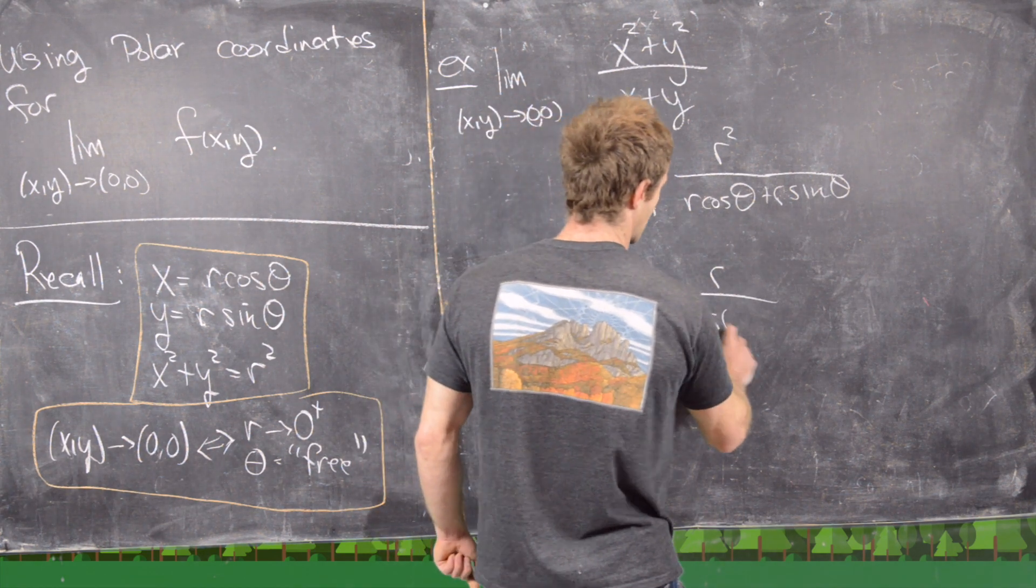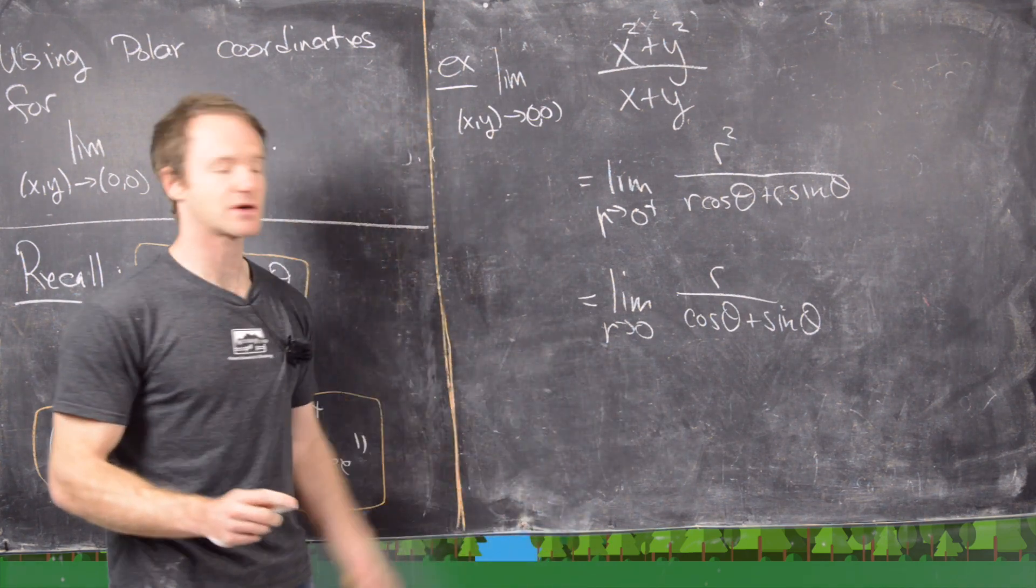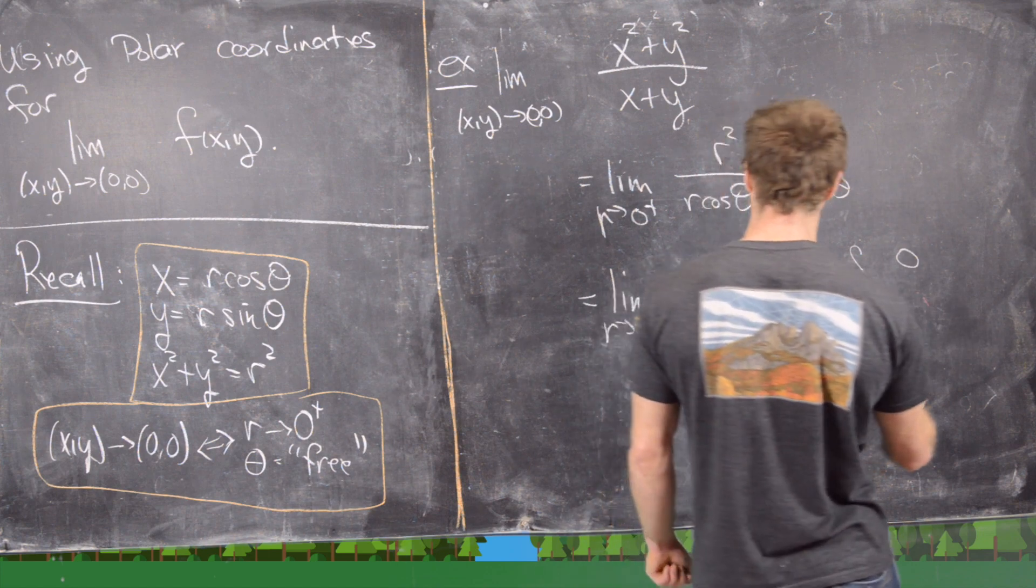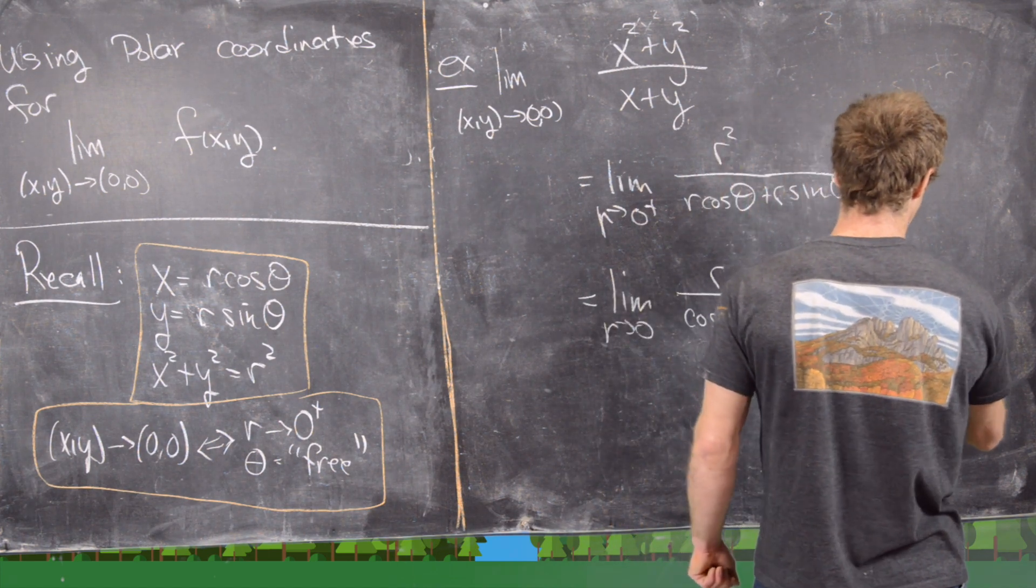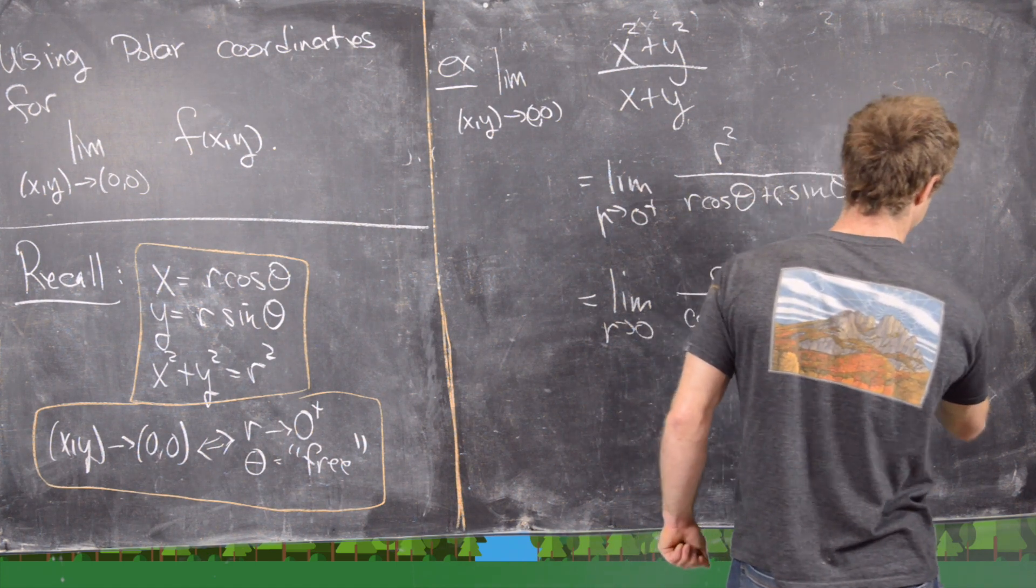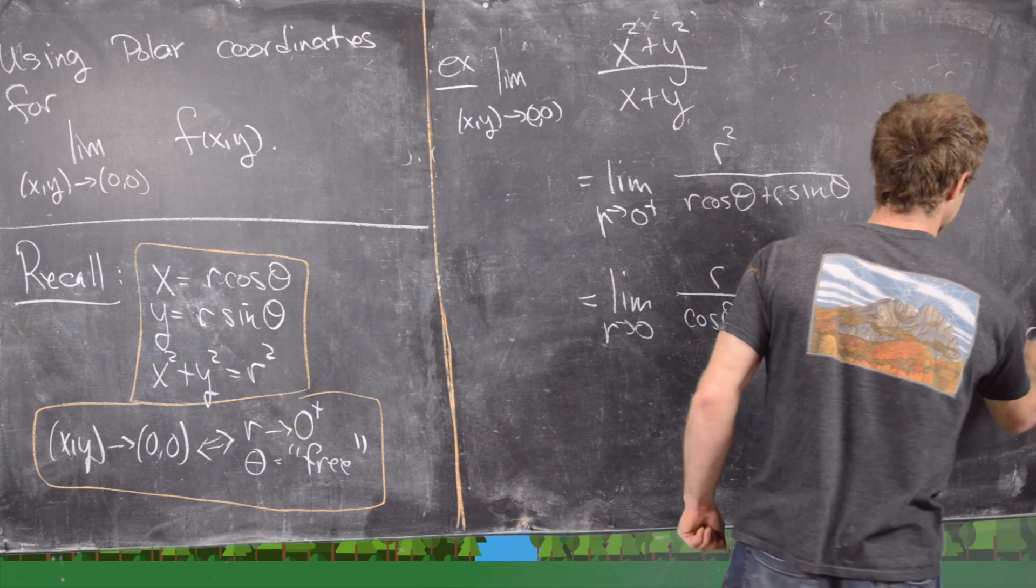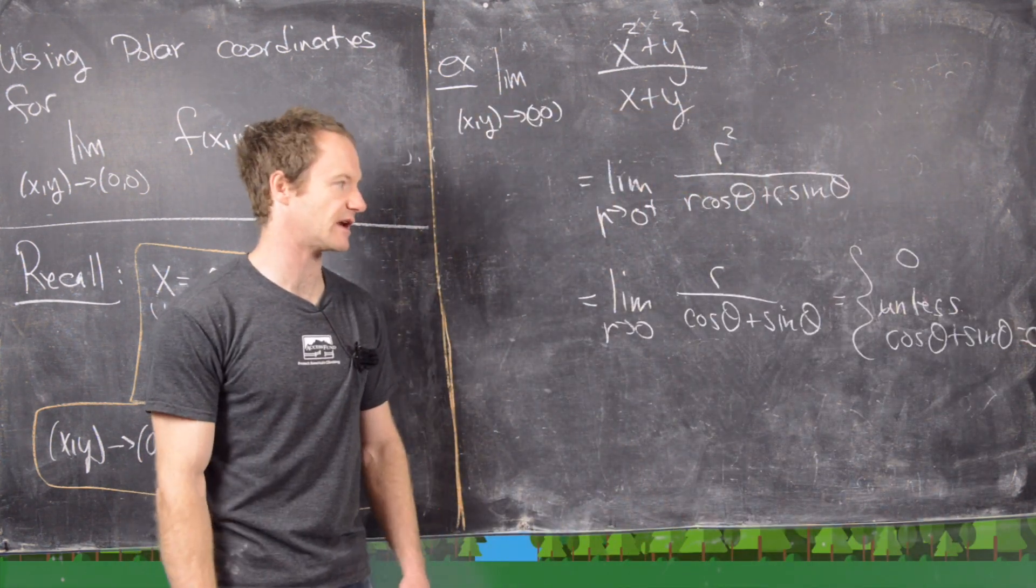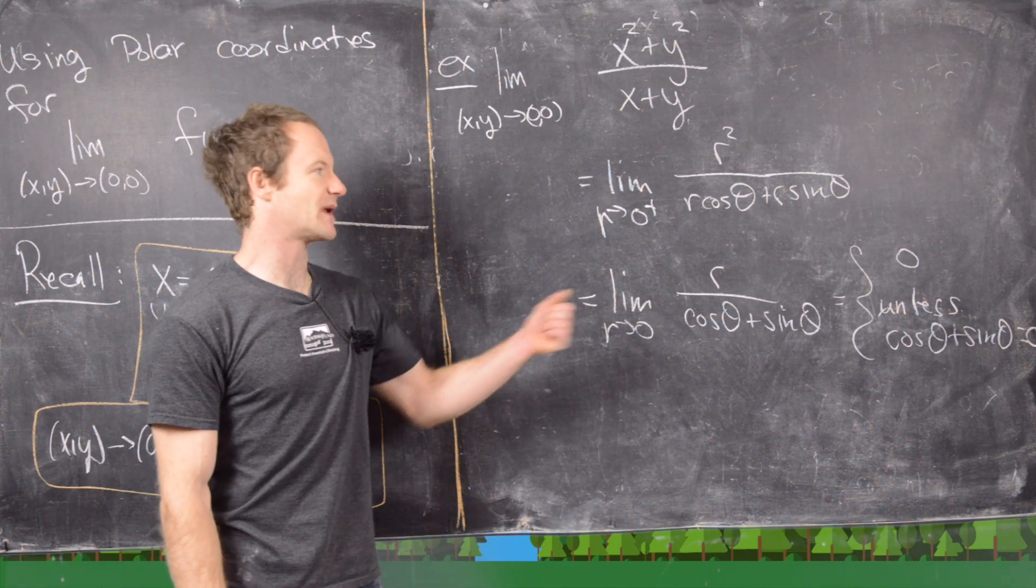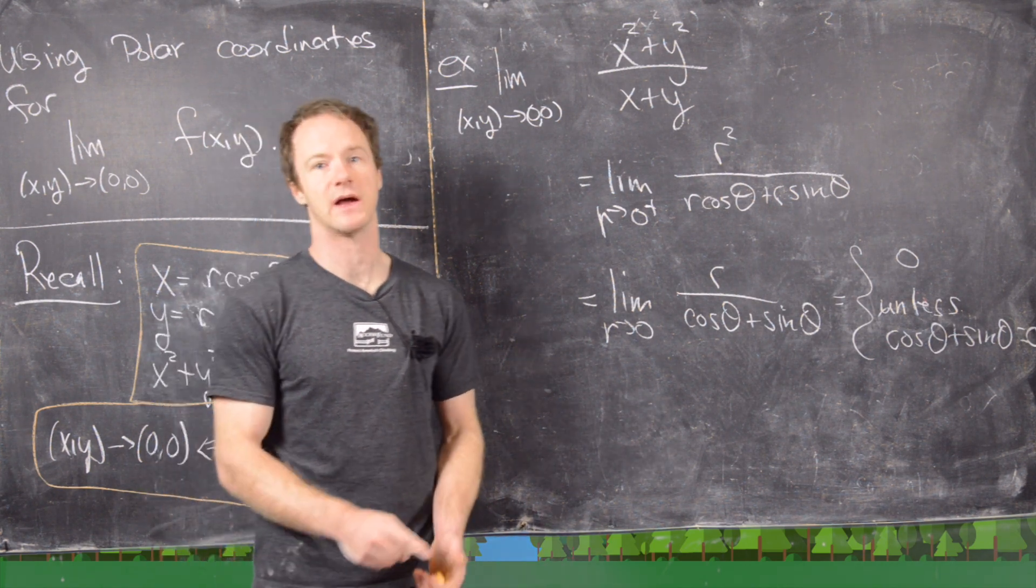...and we get r over cosine theta plus sine theta, which you might think that's going to be equal to zero, and it will be equal to zero unless cosine theta plus sine theta itself equals zero, in which case we have a zero in the denominator. Now, there's a way around this in order to calculate the limit, but I'm not going to do that in this video. I'll leave that for you to think about. Here we're done.